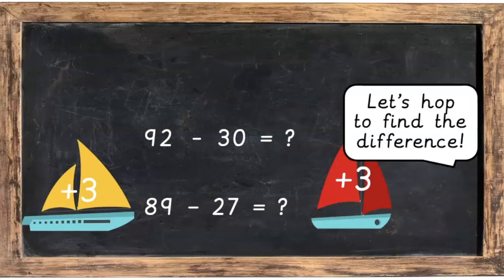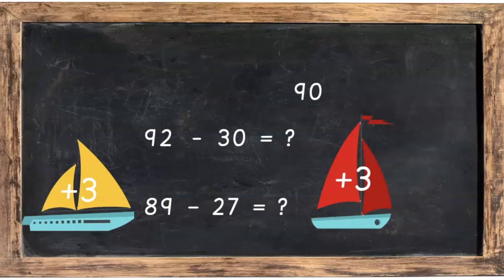So to do 92 take away 30, we're going to hop from 30 up to 92 to find the difference between the two numbers. Let's hop the difference. We're going to jump from 30 up to 90 and then we're going to hop from 90 up to 92.